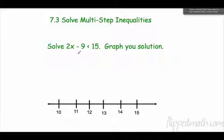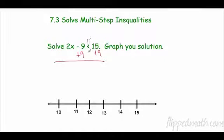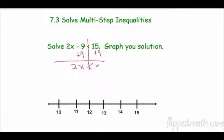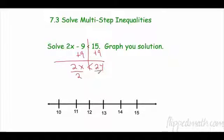I'm going to add 9 to both sides, keeping the inequality sign. So now I have 2x is less than 24. The opposite of multiply by 2 is divide by 2, giving us x is less than 12.